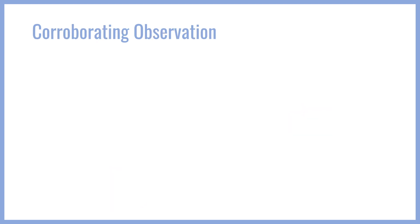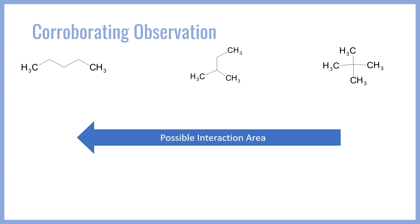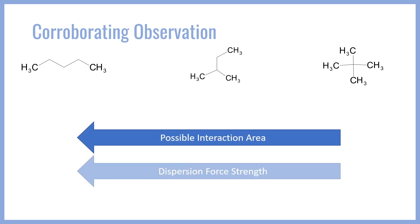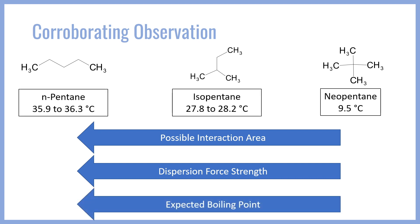To summarize what we have talked about so far, going from n-pentane to isopentane to neopentane, we see a clear and strong correlation between surface area, dispersion force strength, and boiling point. This is all corroborated by experimental data, which shows that neopentane, being the bulkiest, has a far lower boiling point than n-pentane, the straight chain isomer.